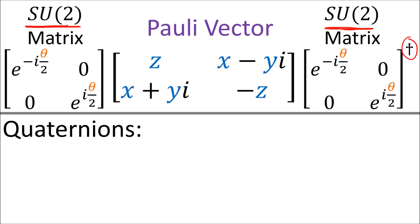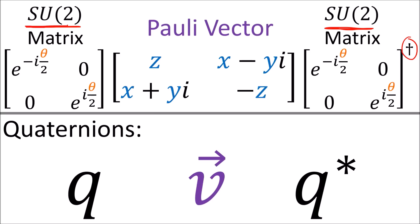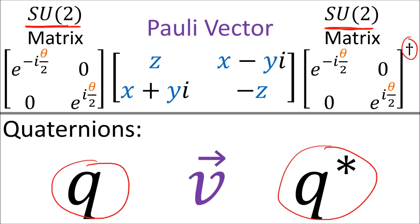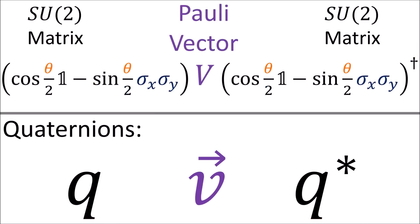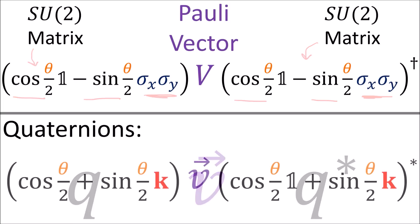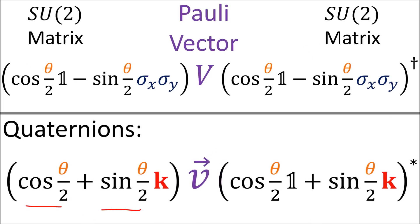Some viewers pointed out this looks similar to rotating vectors with quaternions, which also involves a double-sided transformation with a unit quaternion Q on the left and that quaternion's conjugate Q* on the right. These look even more similar if we rewrite the SU2 matrices using half-angle trig functions and the sigma matrices, and rewrite the quaternion Q using half-angle trig functions and i, j, k.